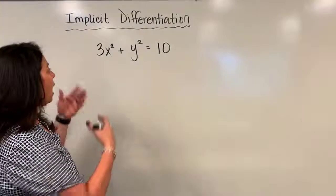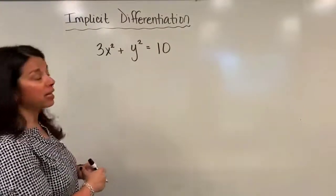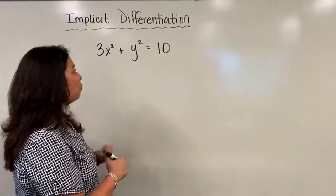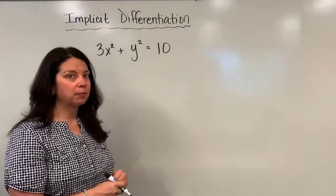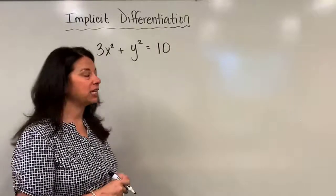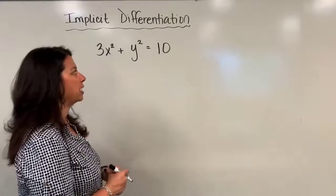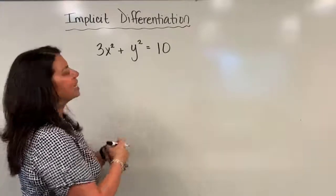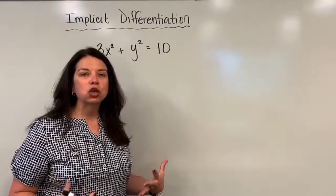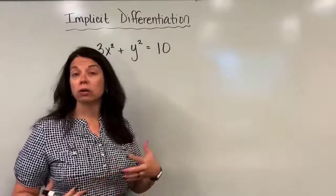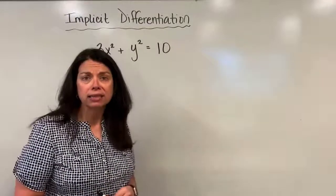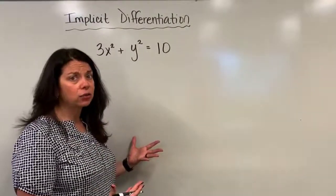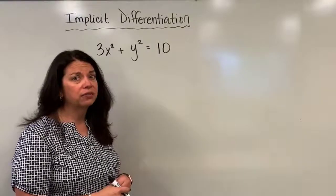I have an equation up here: 3x squared plus y squared equals 10. What makes this equation different than probably all the other equations you've seen so far in exploring derivatives is that this equation is not explicitly solved for say y or perhaps x. So that promotes a challenge for us of how to tackle the derivative here.